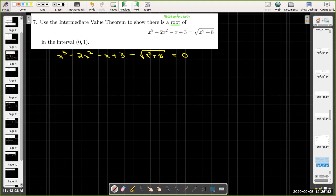So that tells me that the non-zero side is going to be my function value. Let's state that explicitly. Let f(x) be x to the fifth minus 2x squared minus x plus 3 minus radical x squared plus 8.